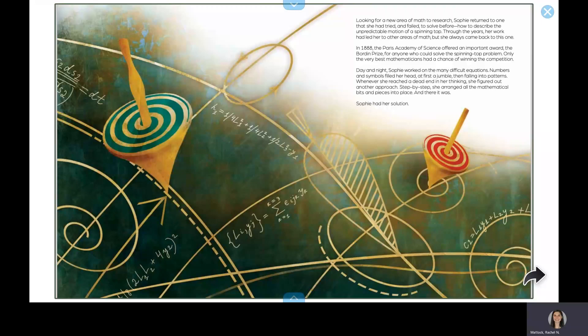Day and night, Sophie worked on the many difficult equations. Numbers and symbols filled her head. At first, a jumble, then falling into patterns. Whenever she reached a dead end in her thinking, she figured out another approach. Step by step, she arranged all the mathematical bits and pieces into place. And there it was. Sophie had her solution.